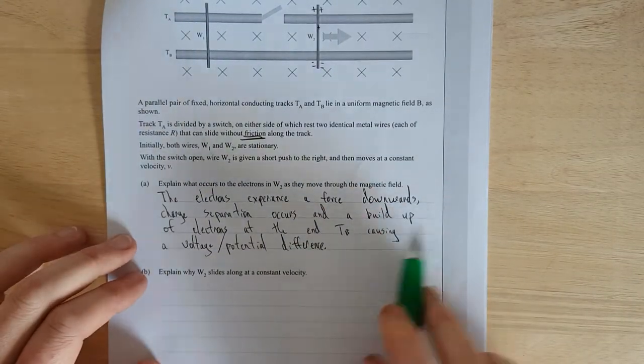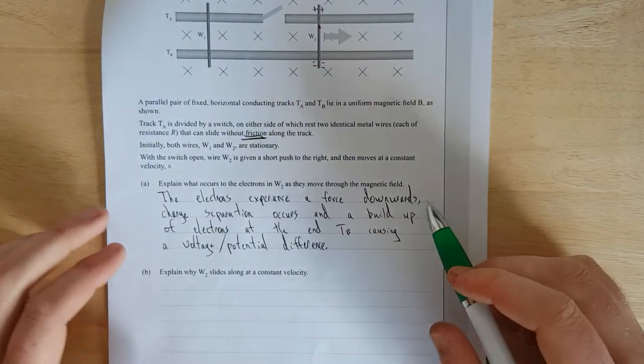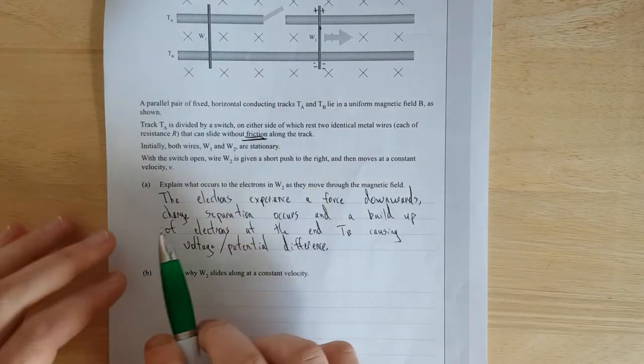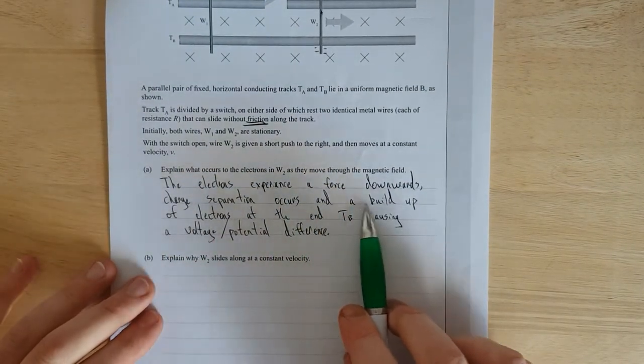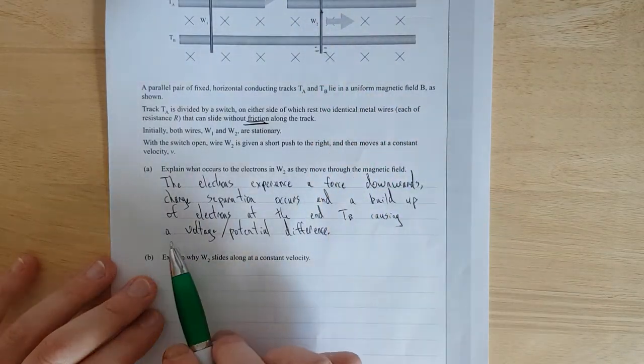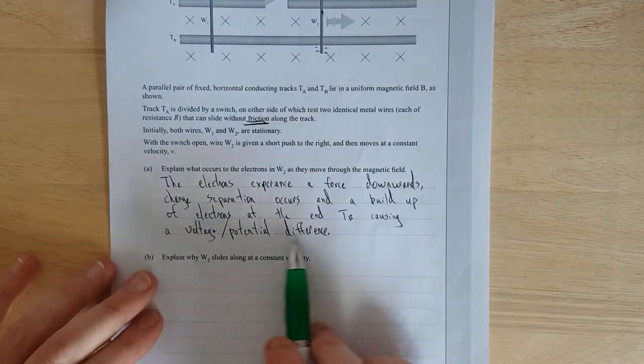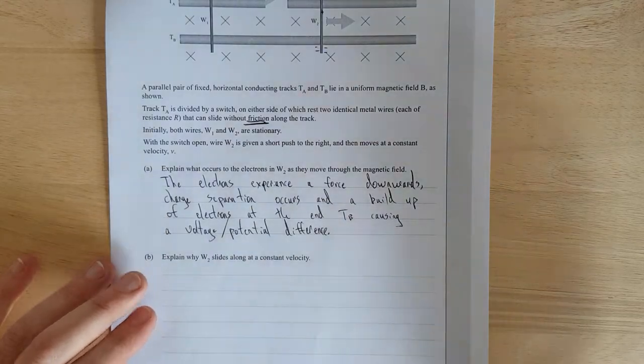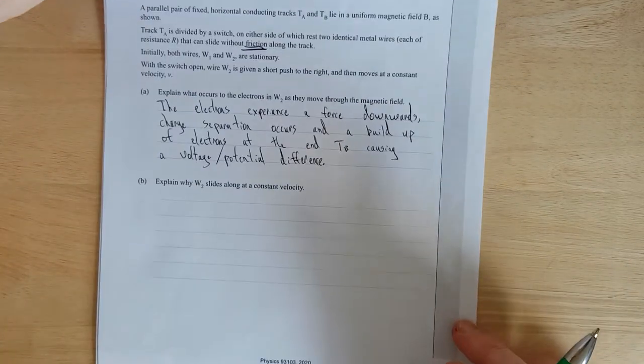So explain what happens to the electrons in W2 as they move through the magnetic field. They just move to the bottom of the page or towards wire, wire, rod, TB. I'll pause it and write it out slightly more succinctly. Right, so obviously the electrons experience the force downwards. I could have said maybe I could have put brackets because of the right hand slap rule, but that's just the rule I used to figure that out. Right, charge separation occurs and a buildup of electrons at the end TB, so this end here, causing a voltage slash potential difference. That doesn't make sense schematically, but I mean it covers what you need to know.